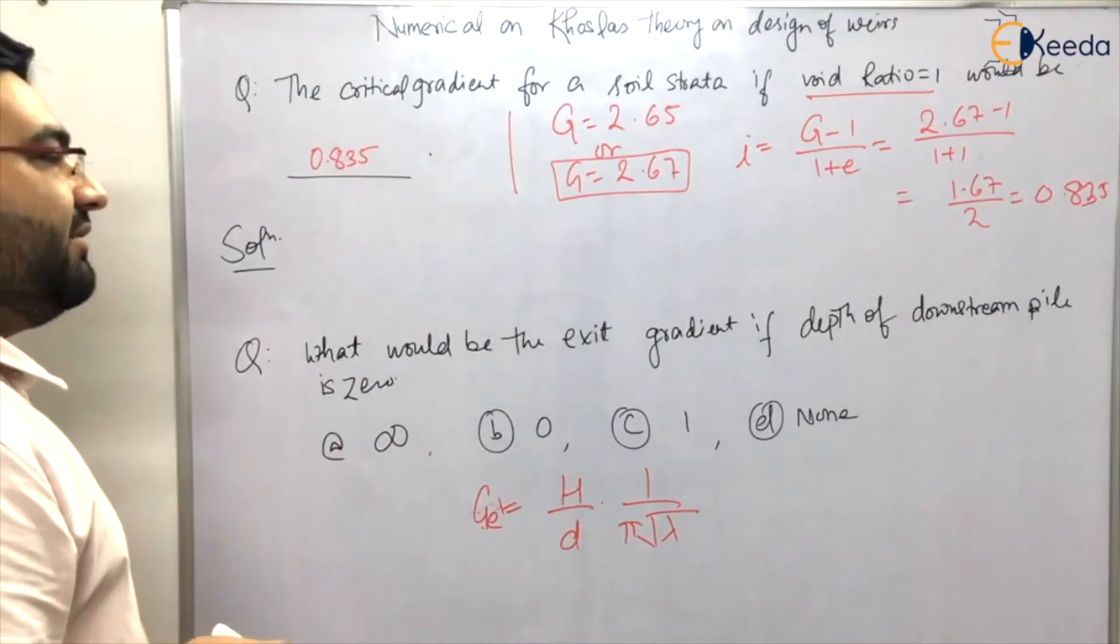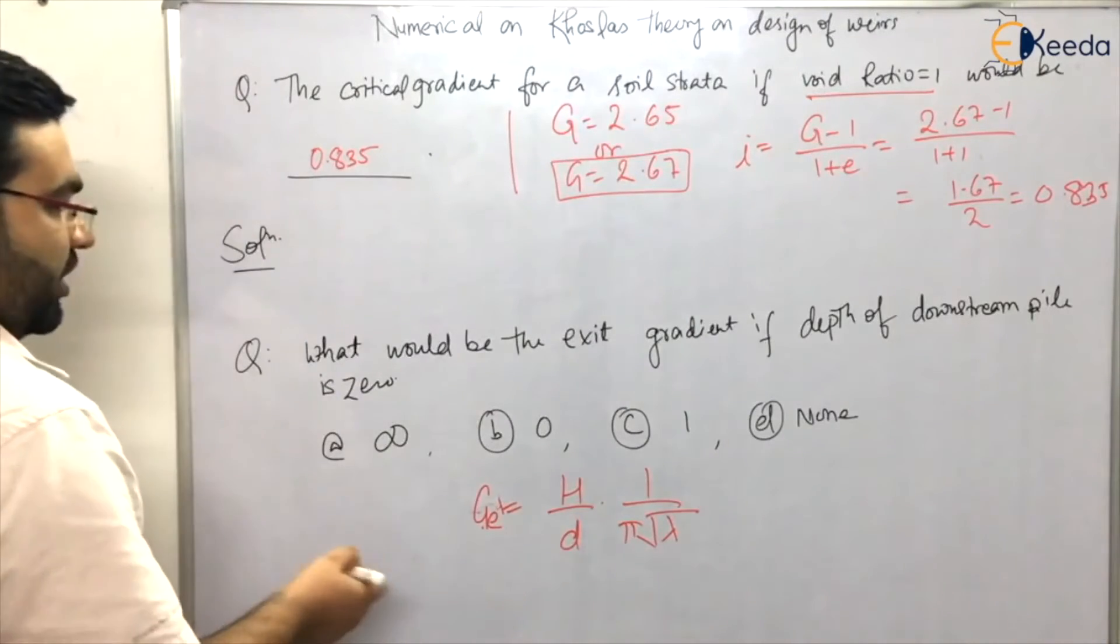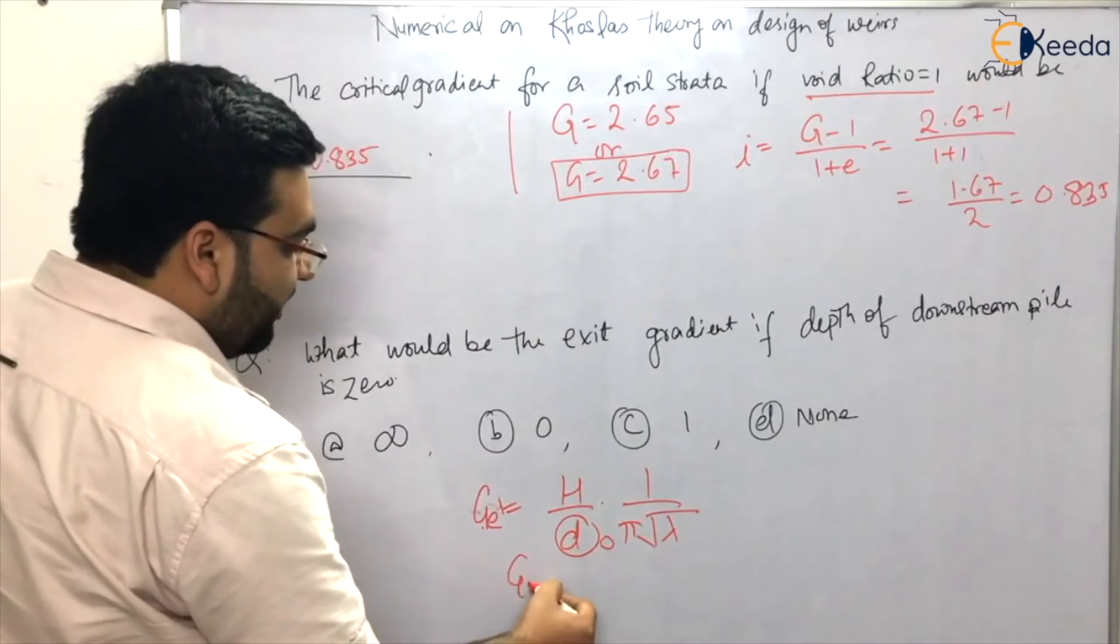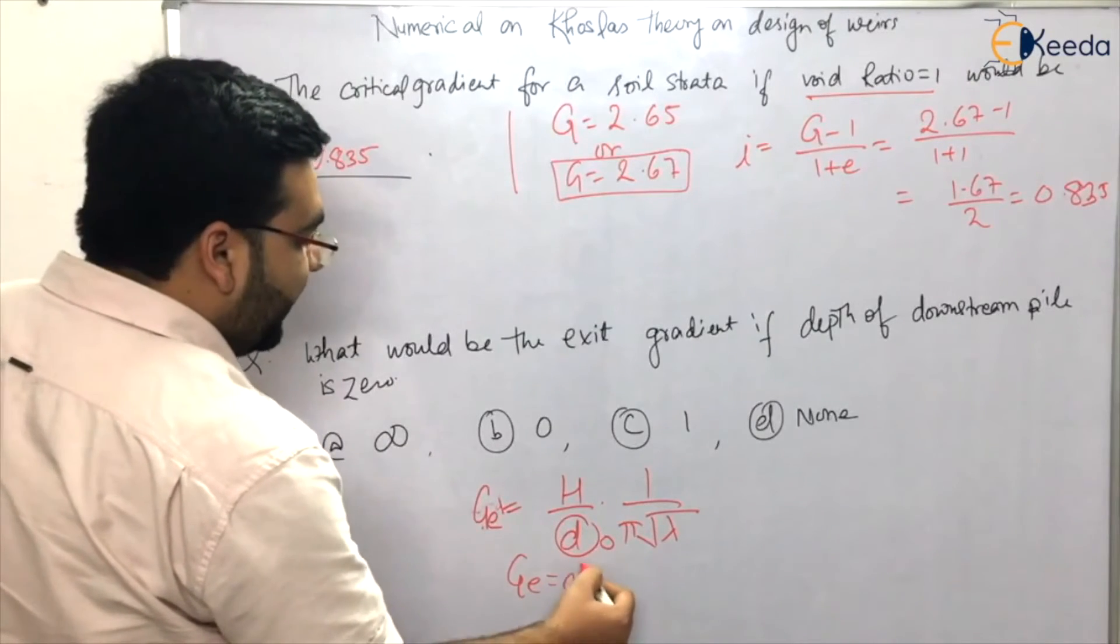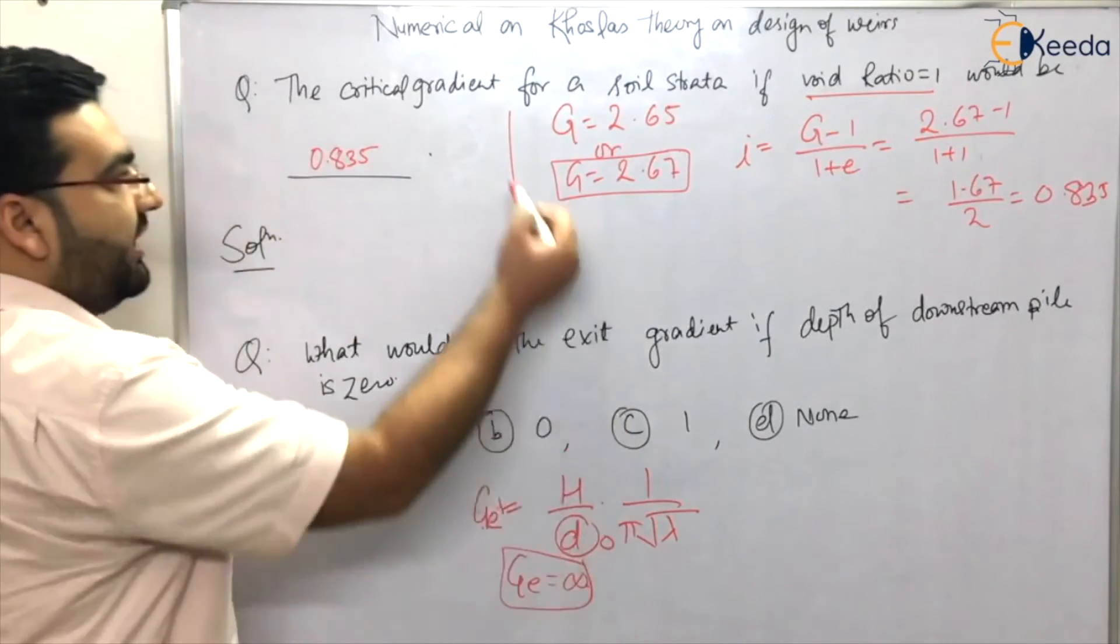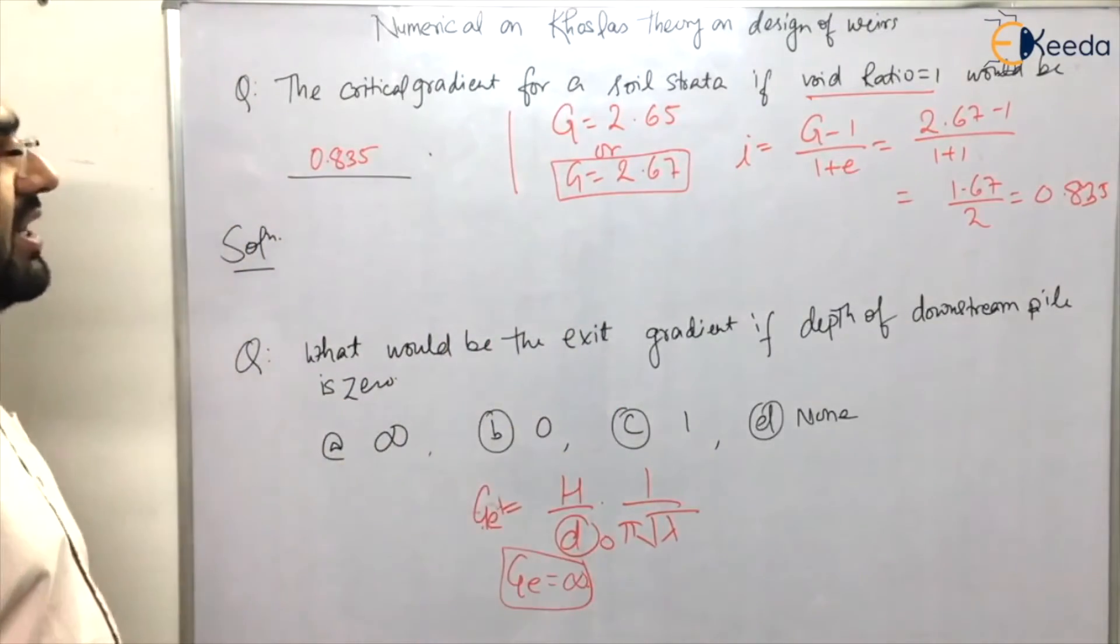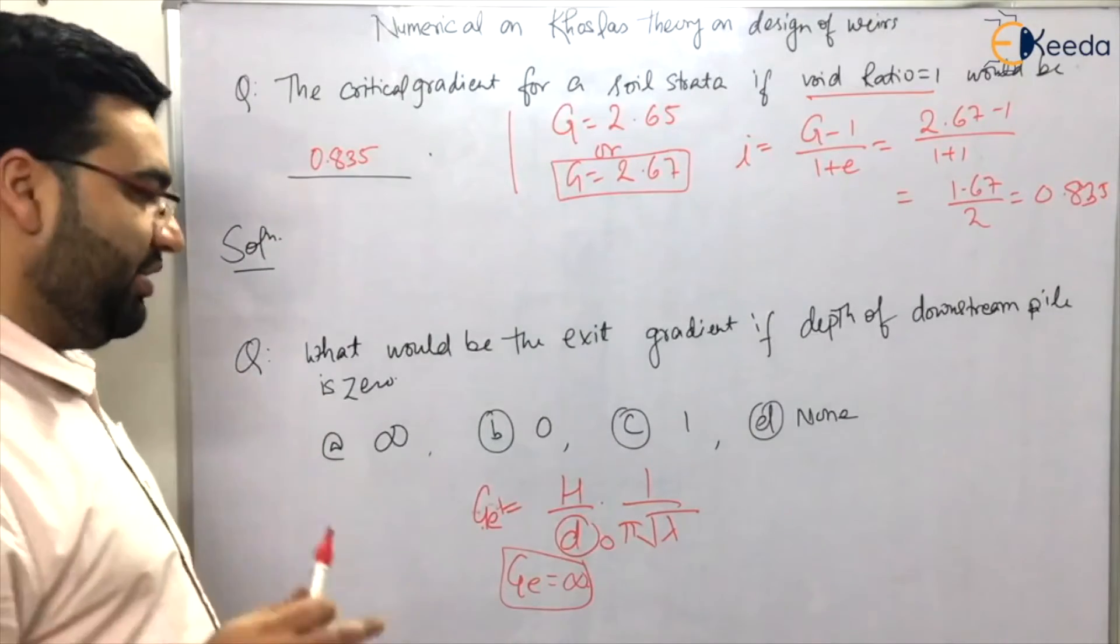What would be the exit gradient if the depth of the downstream pile is zero? So we know that if the downstream pile depth would be zero, Ge will turn out to be nearly infinity. Students, both these questions have been asked in ESE examinations and after that they were repeated in a lot of state examinations and AE examinations.